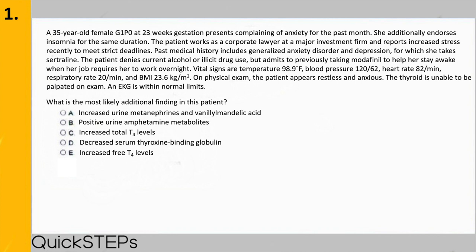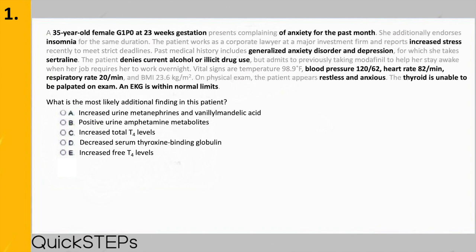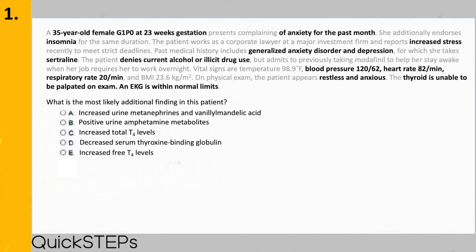Vital signs are temperature 98.9°F, blood pressure 120/62, heart rate 82 per minute, respiratory rate 20 per minute, and BMI 23.6. On physical exam, the patient appears restless and anxious, the thyroid is unable to be palpated on exam, and EKG is within normal limits. The key words we highlighted were: 35-year-old female, G1P0 at 23 weeks gestation, anxiety and insomnia for the past month, increased stress, GAD and depression, sertraline, denies current drug use, and normal vitals.